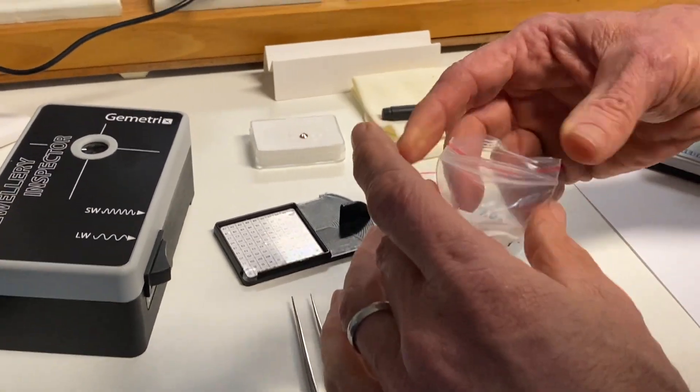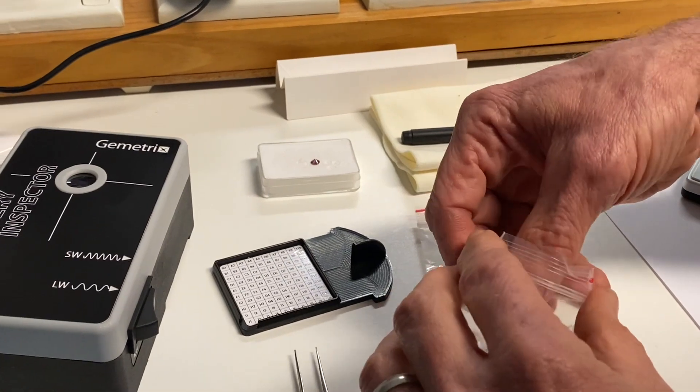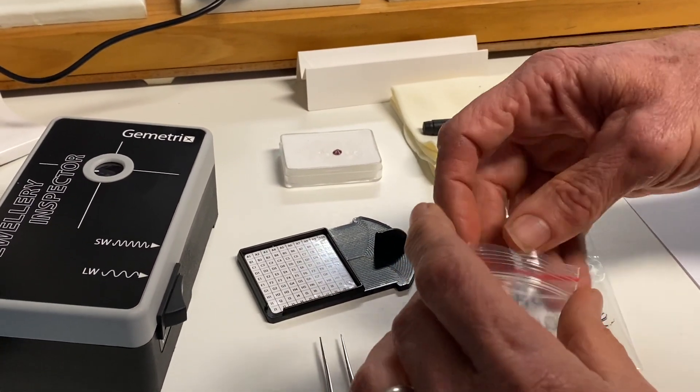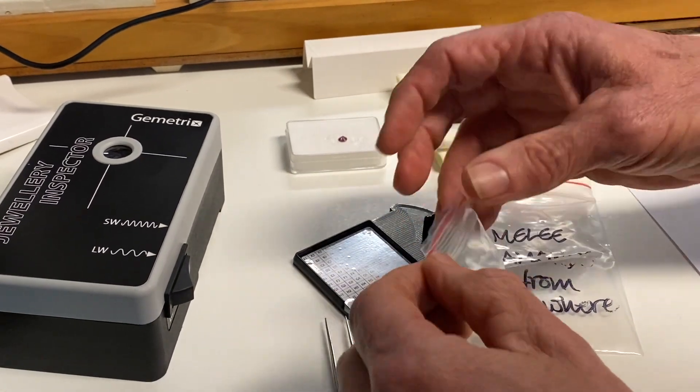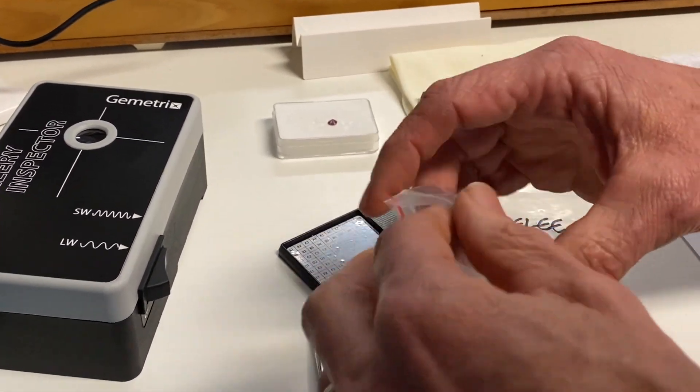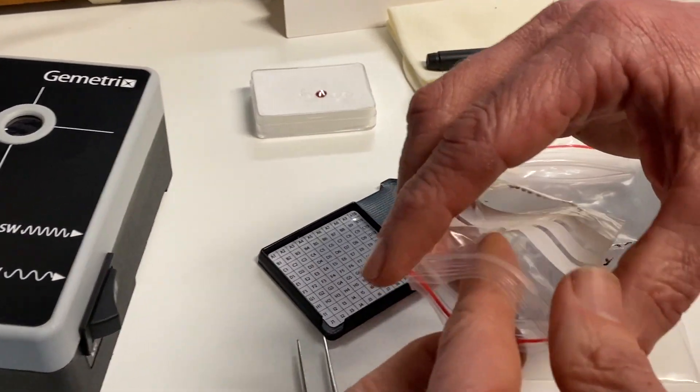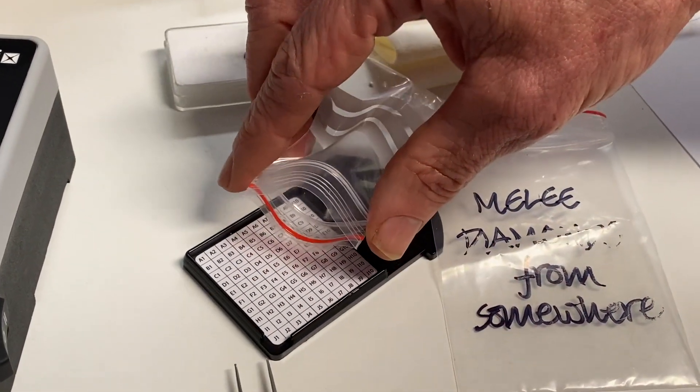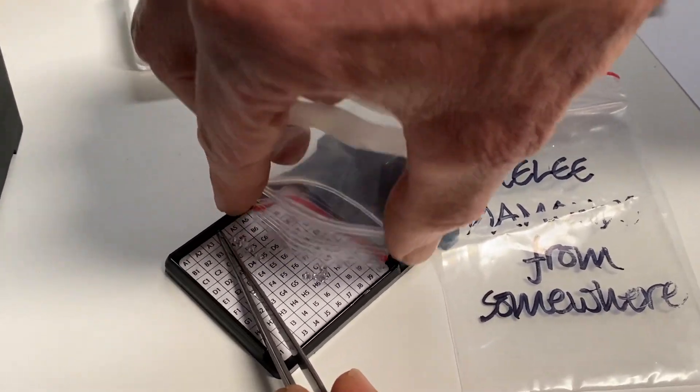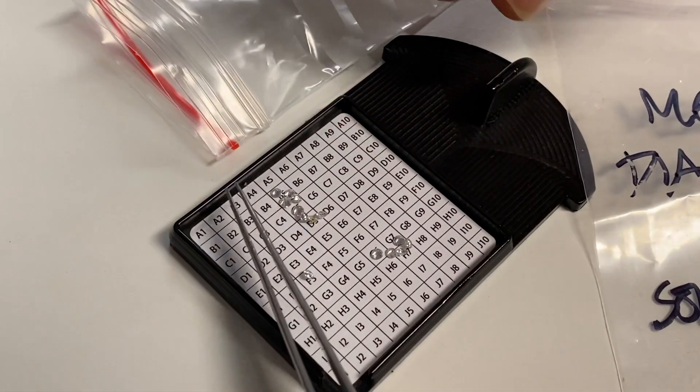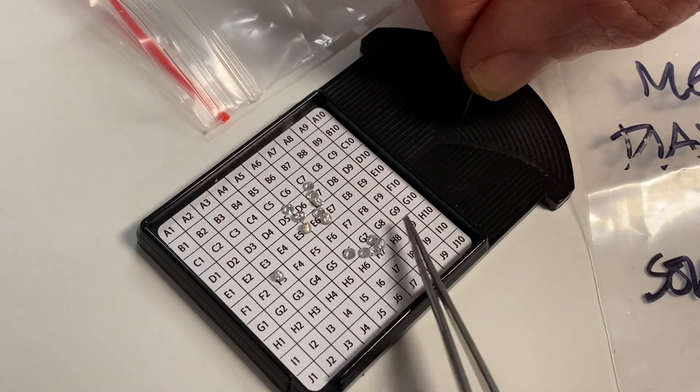But the thing about the melee, if they're synthetic, they'll only be HPHT on the whole. Well, 99% of them will be HPHT because it's too... It's uneconomic to make them by CVD methods. So since we're only looking for whether HPHT or not, it's phosphorescence, which is the technique. That afterglow. The afterglow indeed.